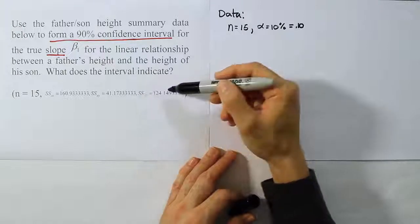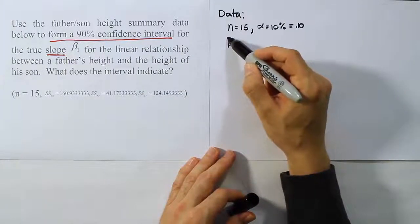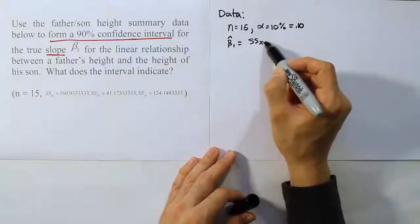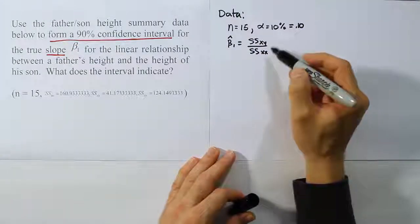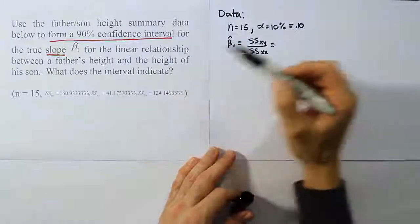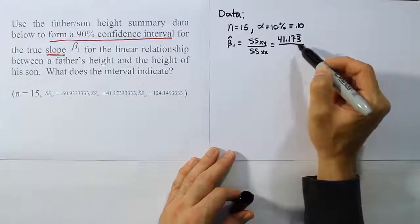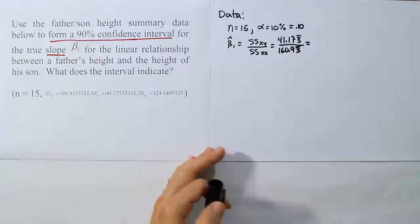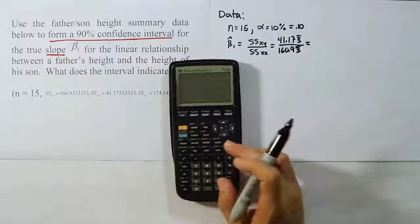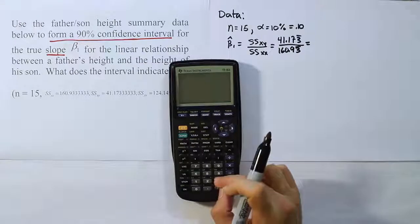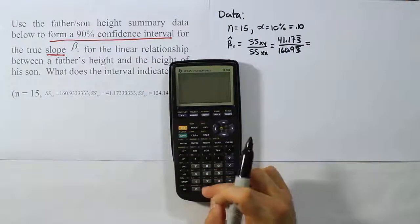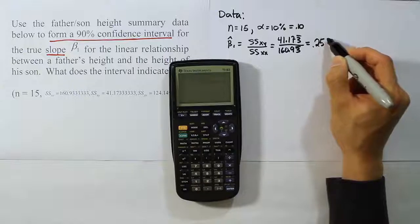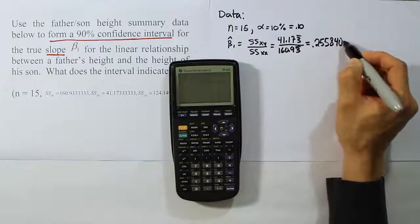We have the n and the alpha. The rest of it is going to come from these sum of squares values and we're going to use them to form certain items that we need for the confidence interval. The most important one we're going to do first is the slope estimator beta 1 hat. So we need to do SSXY over SSXX, the mixed term over the X term. The sum of square XY is going to be 41.173 repeating divided by 160.93 repeating. Let's work that out with our calculator and see what result we'll come up with. So I have 41.173333333 divided by 160.93333333. When we're done, we end up with the answer 0.255840 dot dot dot.